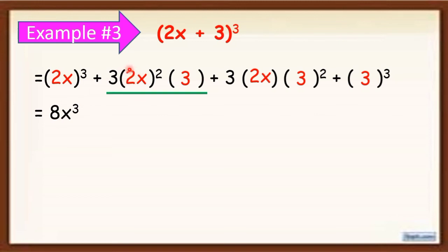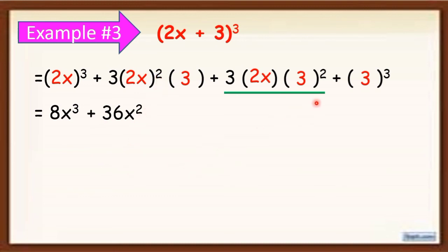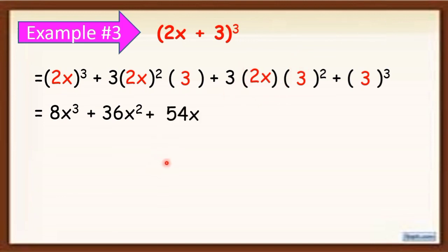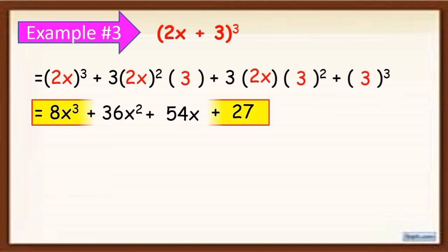Next, simplify the third term — apply PEMDAS. First simplify 3 squared, which equals 9. Then 3 times 2 times 9 equals 54, and copy x, giving 54x. Then simplify 3 cubed: 3 times 3 equals 9, times 3 equals 27. So the final answer is 8x cubed plus 36x squared plus 54x plus 27.